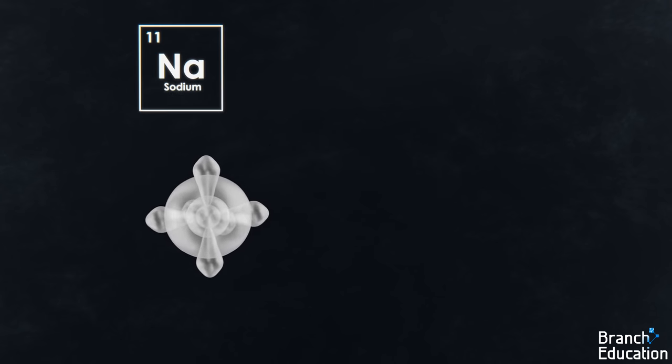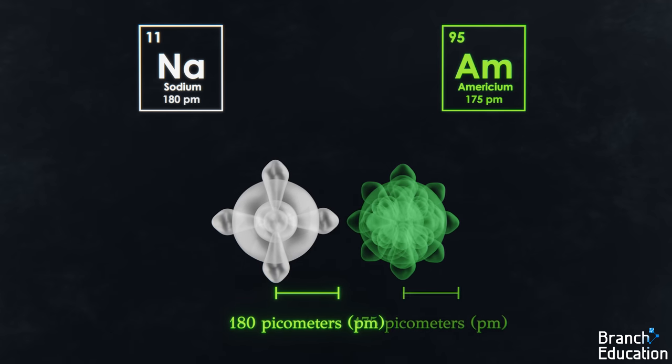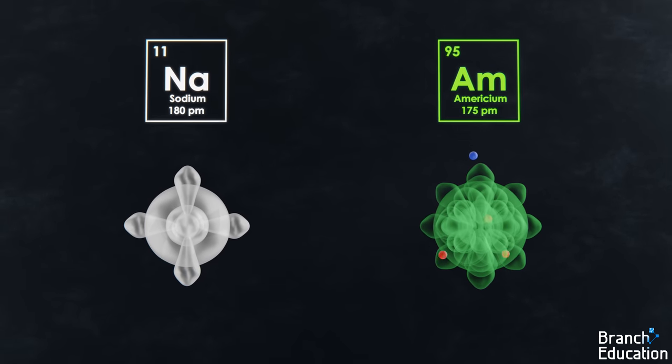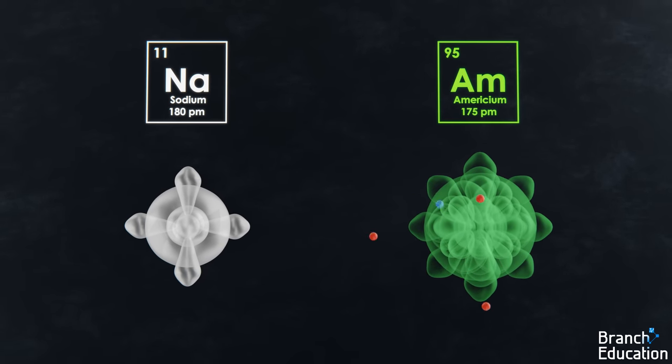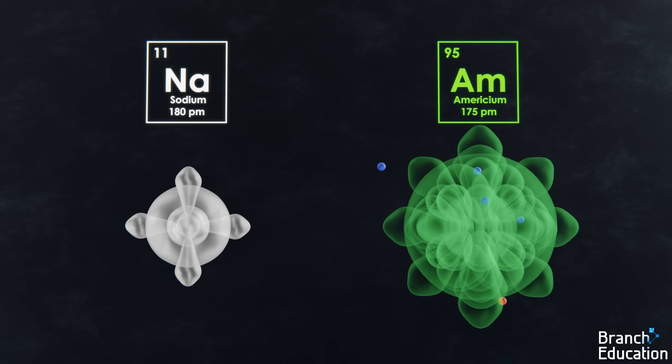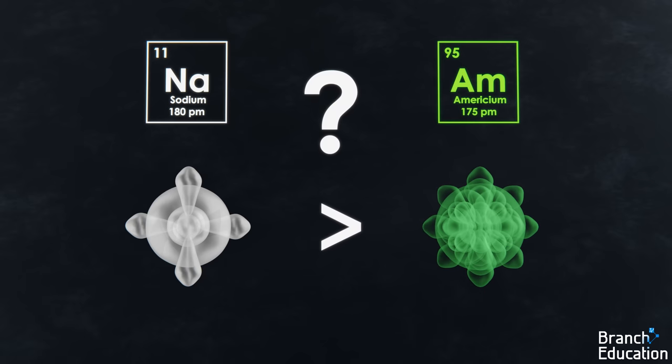Here's sodium with 11 protons, and here's americium with 95 protons. When we look at the atomic radii based on empirical measurements, sodium is in fact larger than americium. This is rather counterintuitive because you would think that as we add more protons, neutrons, and electrons, the size of the atom would correspondingly increase. So why is sodium larger than americium?